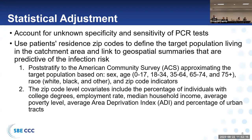We get zip code level measures from the American Community Survey. Those include, for example, the percentage of residents with college degrees, the employment rate, the median household income, average poverty level, the Area Deprivation Index (ADI), the NADA measure, and the urban-rural percentage for that zip code. We then adjust the patient's representation based on the ACS population living in the catchment area. This is the basic idea of our MrP approach.